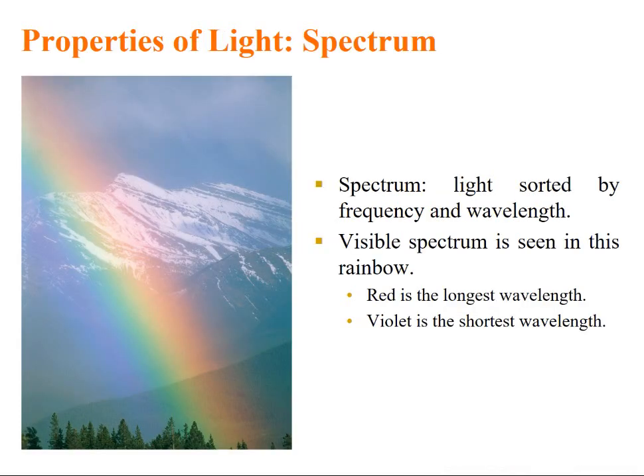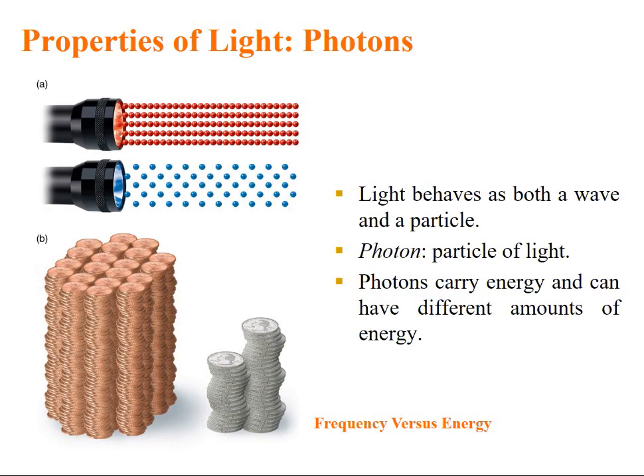Properties of light, we shall continue and talk about spectrum. Light sorted by frequency and wavelength can be called as spectrum. Visible spectrum is seen in this rainbow. Red is the longest wavelength and violet is the shortest wavelength.